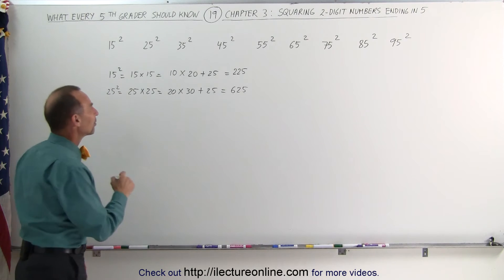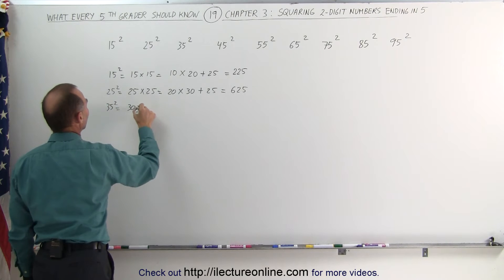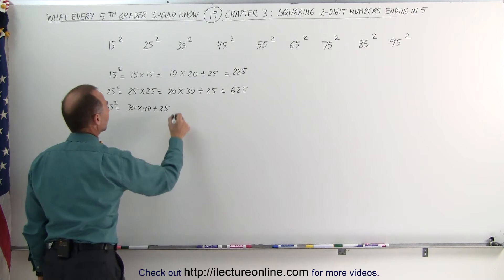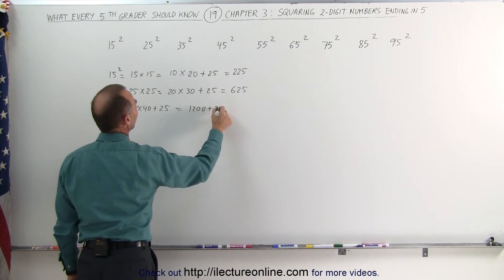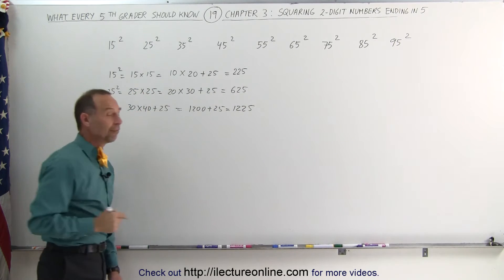Pretty neat, isn't it? Let's try 35 squared. 35 squared is the same as 30 times 40, plus 25. And so that would be equal to 30 times 40, which is 1200, plus 25, which is 1225, and that's 35 squared.